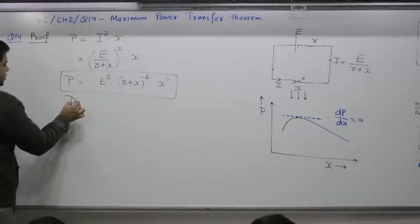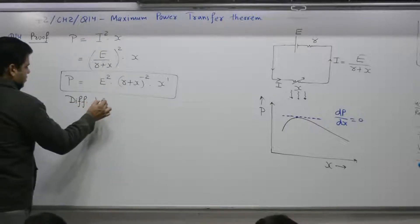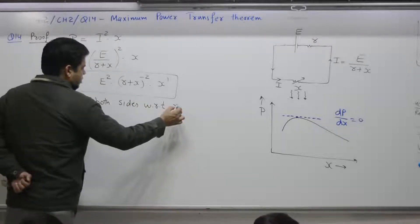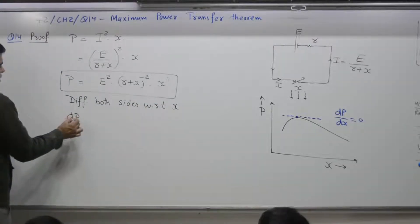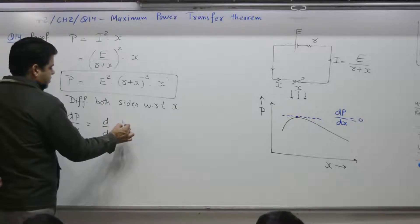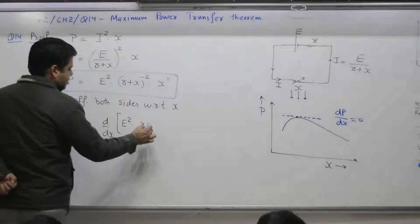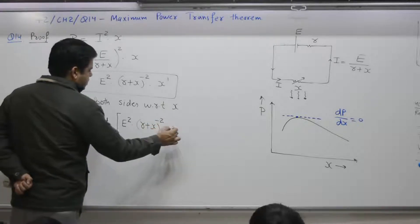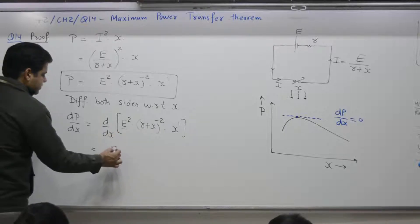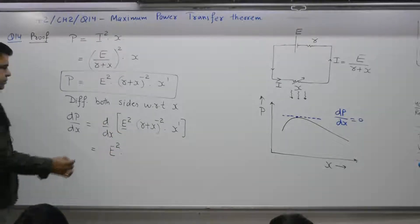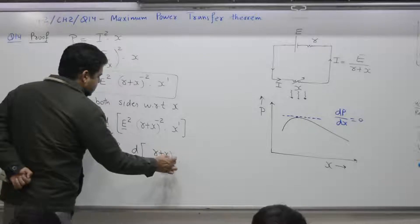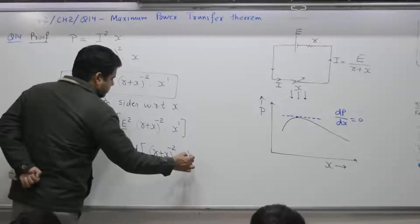Now differentiate both sides with respect to X. dP/dX is equal to the derivative of E squared times (R plus X) to the power minus 2 times X to the power 1. E squared is a constant, so you can take it outside.